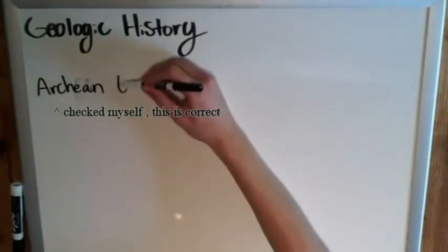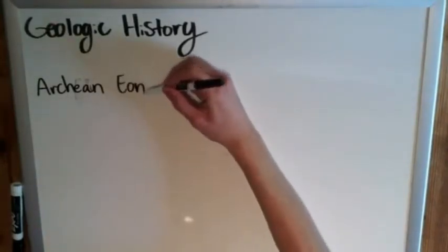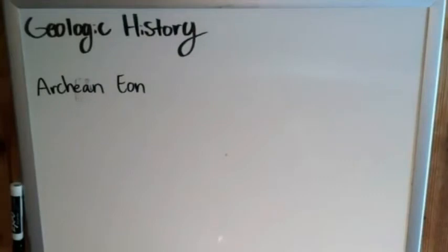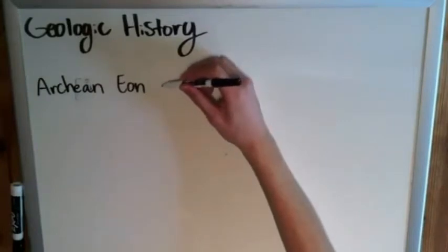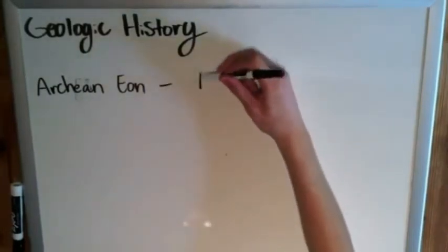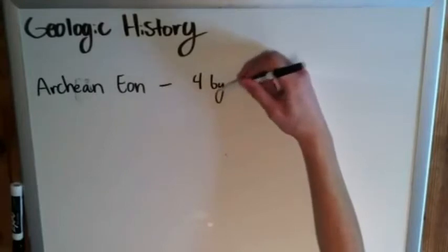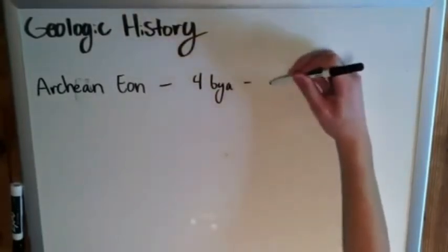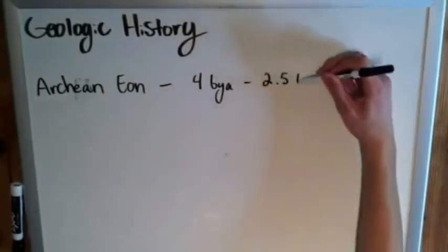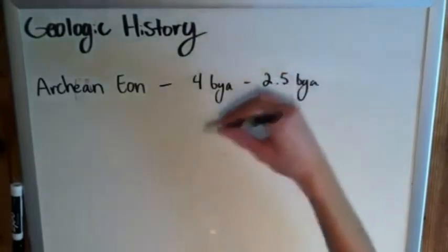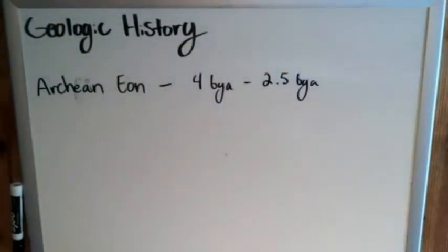The Archean Eon — as I discussed in my last video, geologic time is divided up based on how much interesting stuff occurs during certain divisions. This was a very long time ago, about 4 billion years ago with the formation of the Earth, to 2.5 billion years ago — a pretty long period of time, because not a whole lot happened.